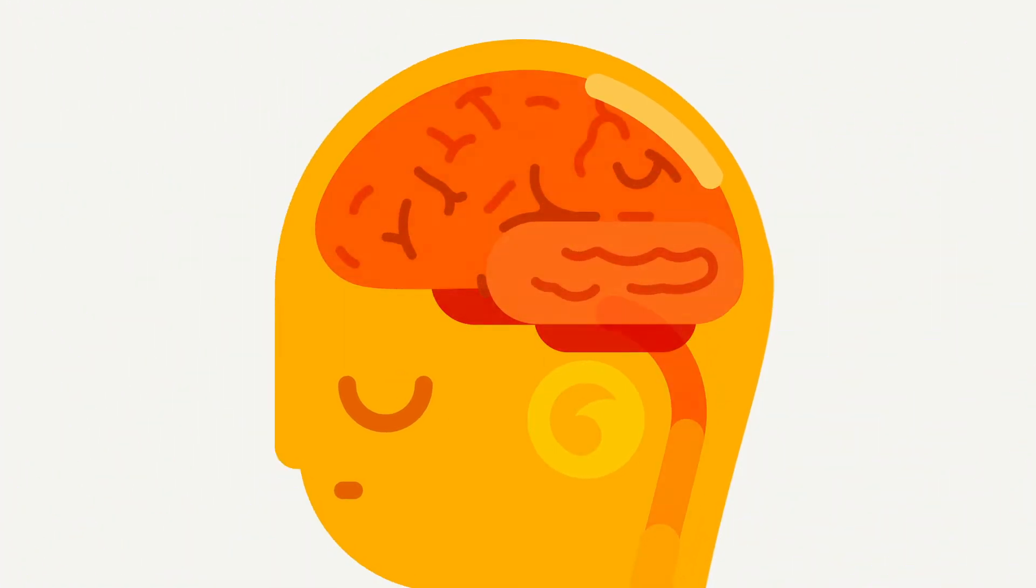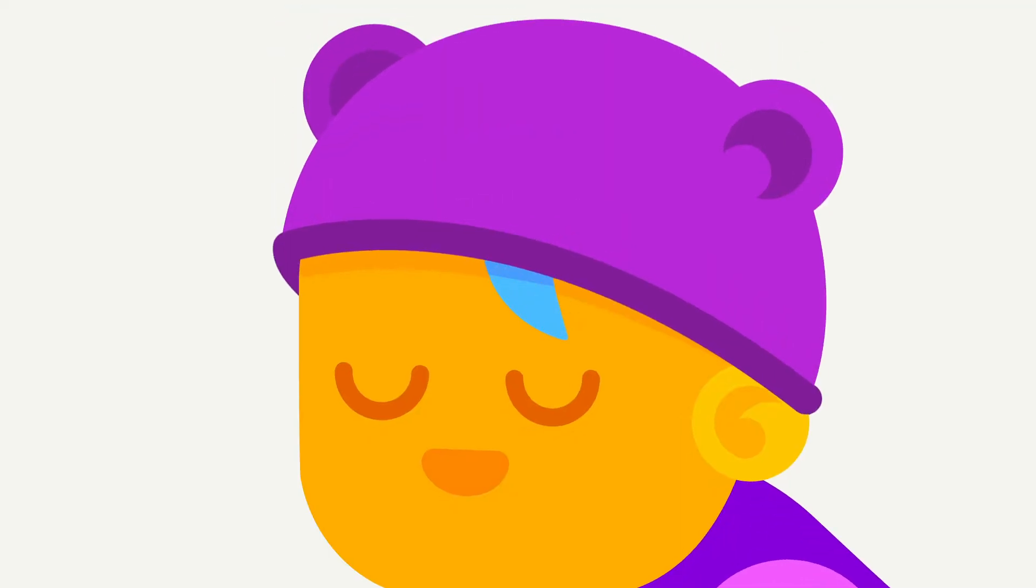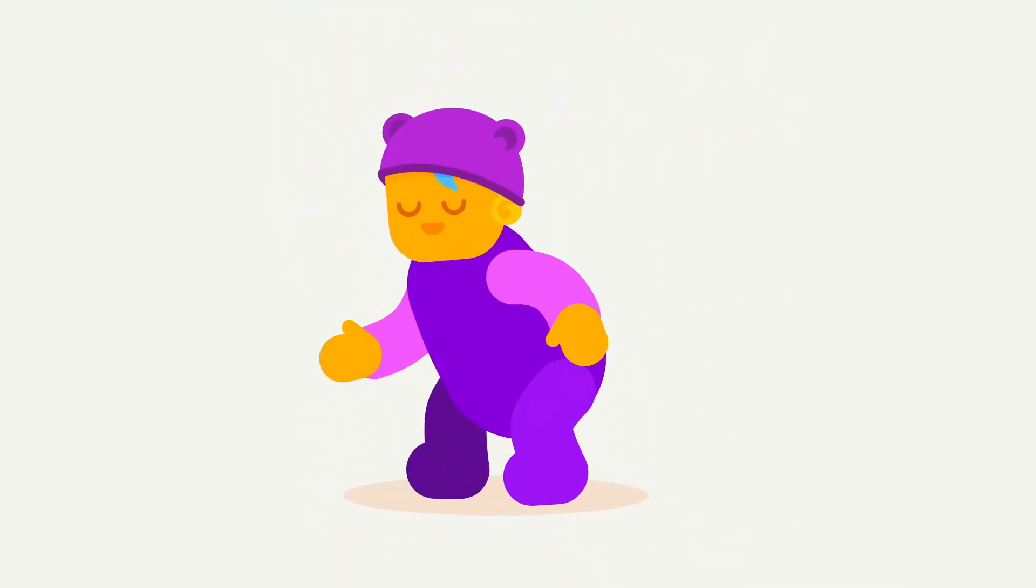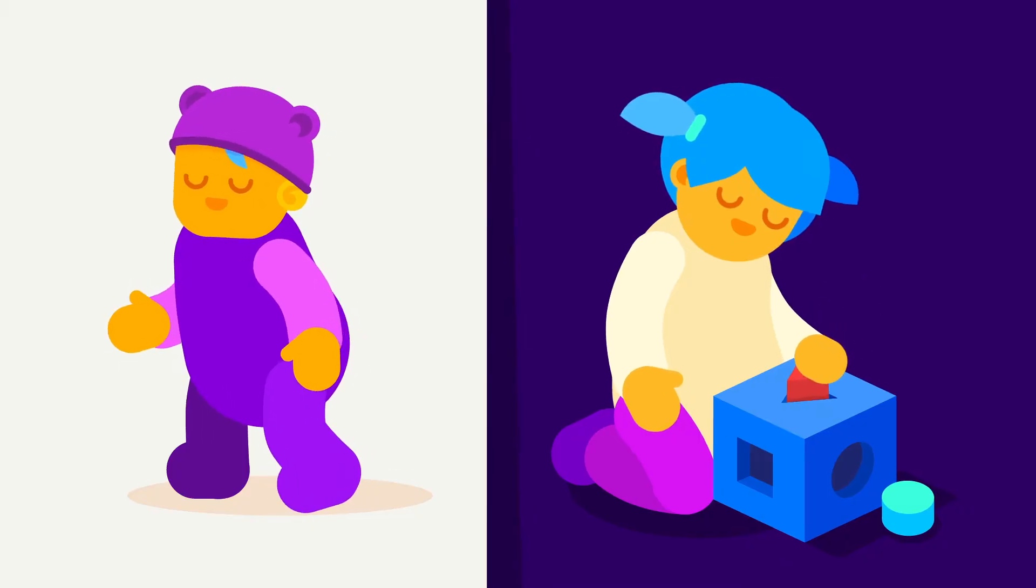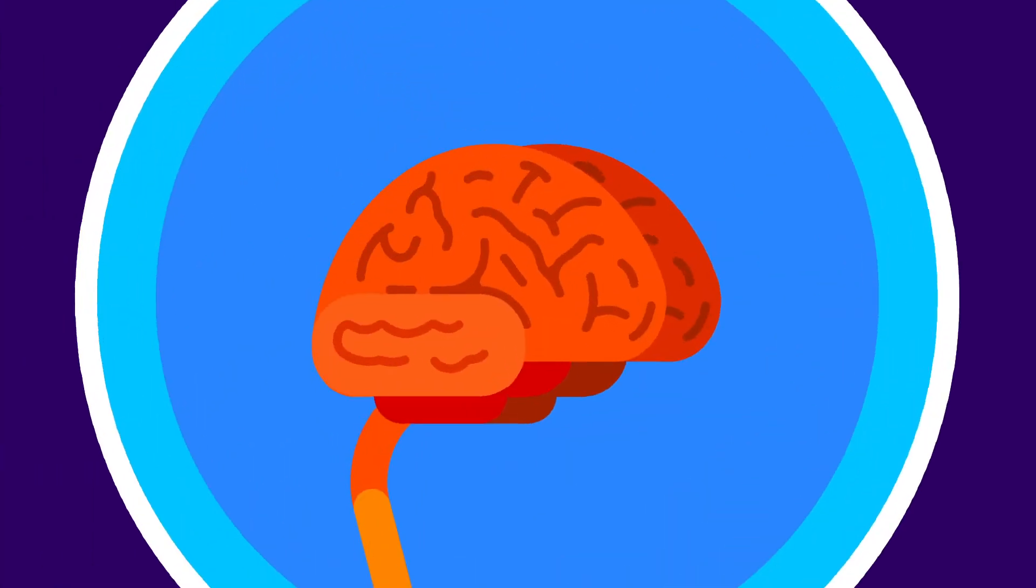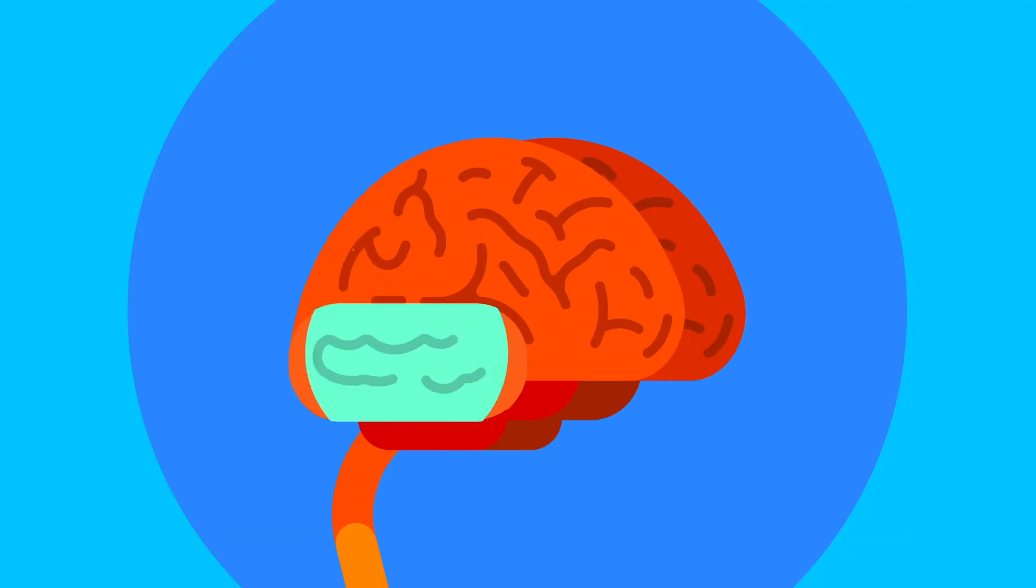But brain development doesn't stop at birth. The best is yet to come. As we grow up, we first learn basic and then increasingly complex skills. This is possible because the different regions of our brains mature and become more and more specialized.